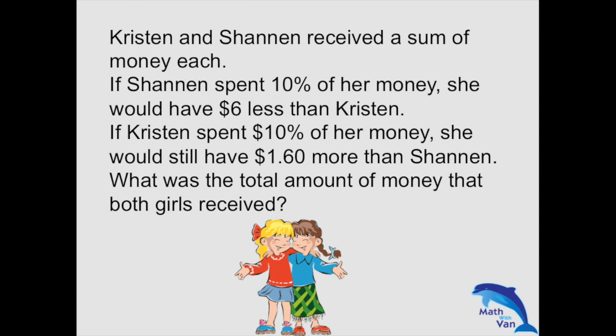Kristen and Shannon receive a sum of money each. If Shannon spent 10% of her money, she would have $6 less than Kristen. If Kristen spent 10% of her money, she would still have $1.60 more than Shannon. What was the total amount of money that both girls received?